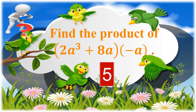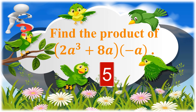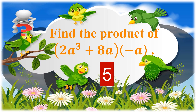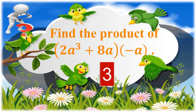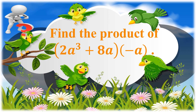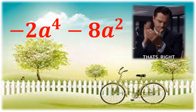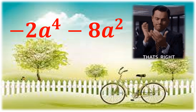Now let us have a short quiz. Find the product of the quantity 2a to the third plus 8a times negative a. The answer is negative 2a to the fourth minus 8a squared.